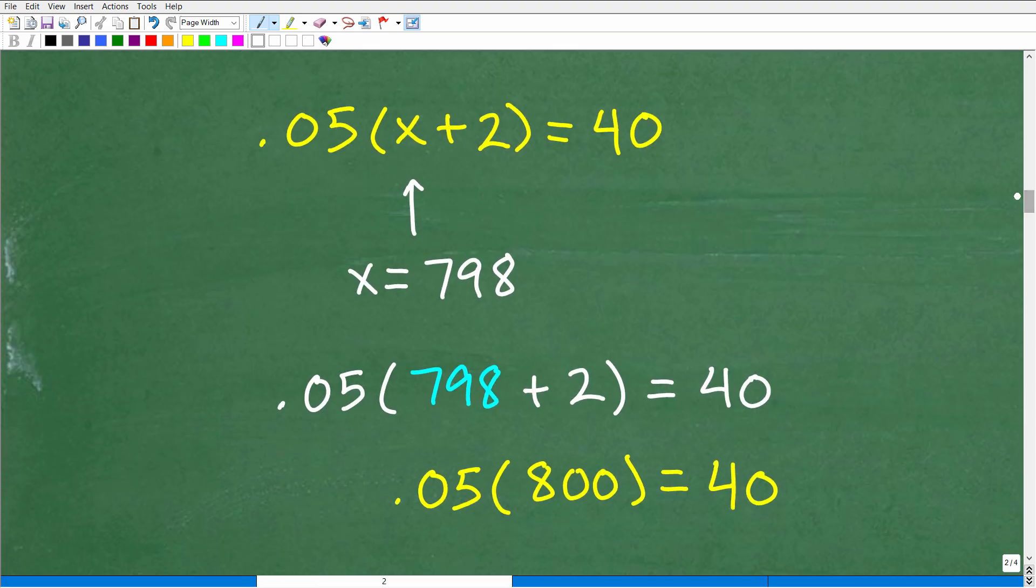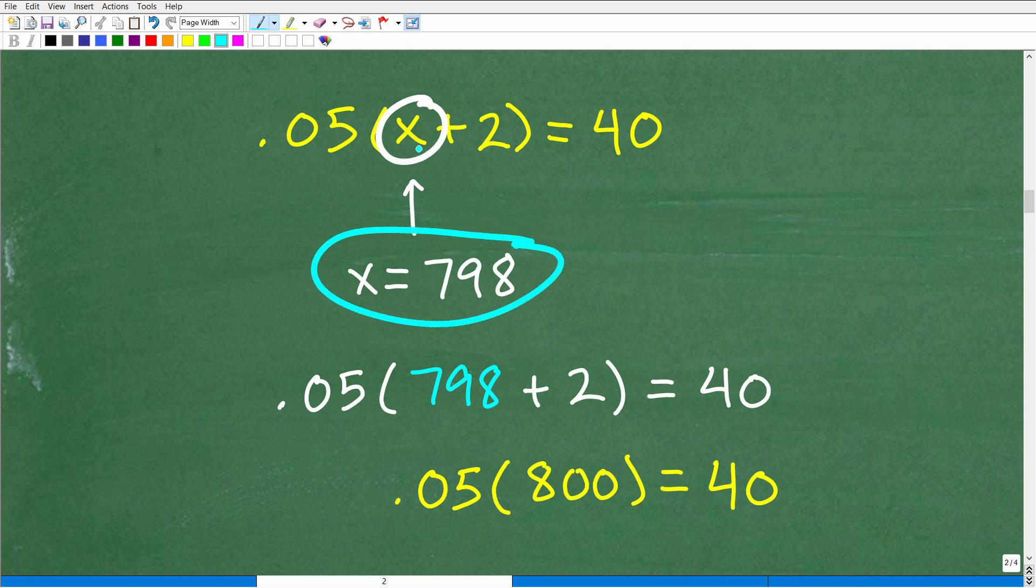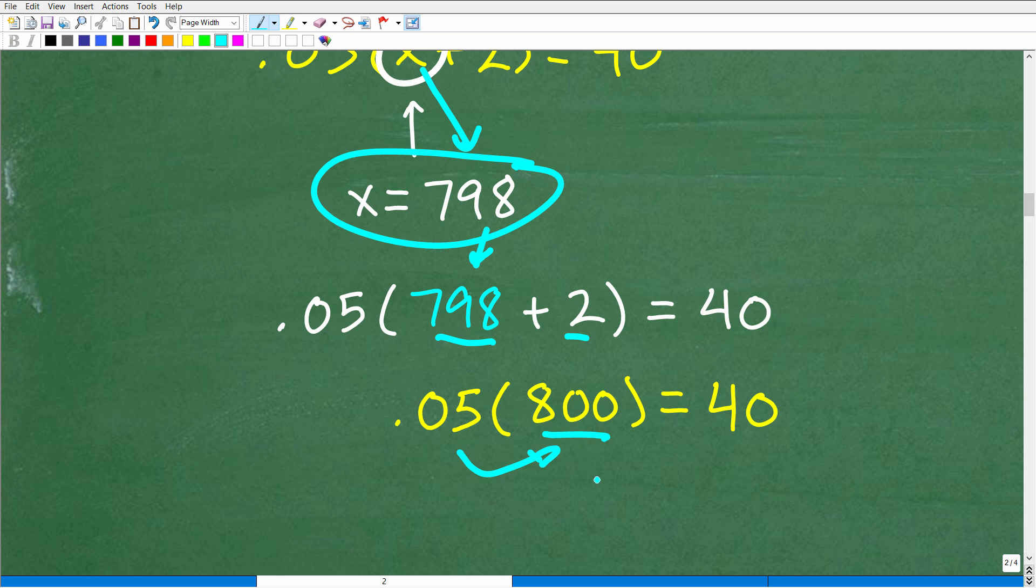Well, if x is equal to 798, I can replace this x with 798 right here. And let's see what happens. So we'll replace that x with 798. So it's going to be 798 plus 2. 798 plus 2 is 800. 0.05 times 800. Go ahead and do that in your calculator. Just so you can see is, in fact, 40. So 40 is equal to 40.